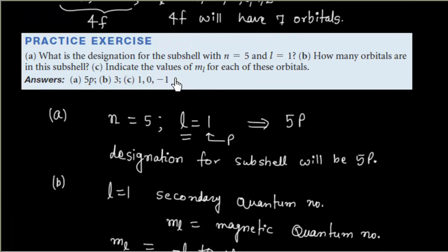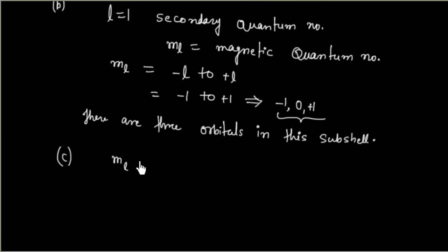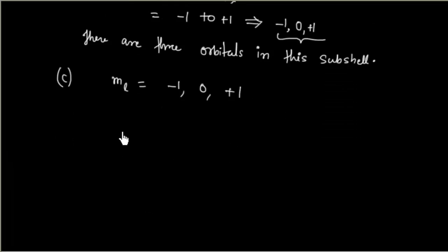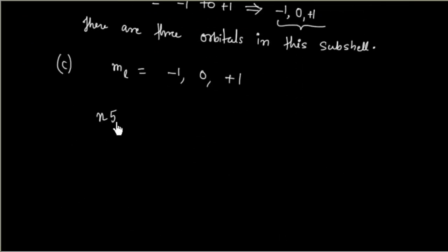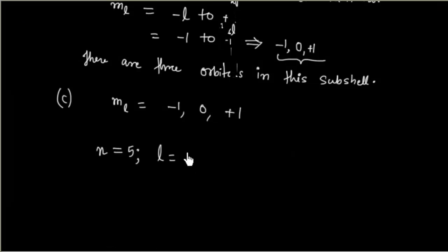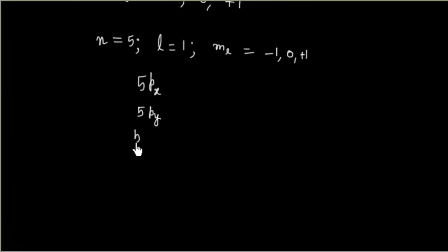Part C asks to indicate the values of ML for each of these orbitals. For n equal to 5 and l equal to 1, ML values are minus 1, 0, and plus 1. These orbitals can be identified as 5Px, 5Py, and 5Pz.